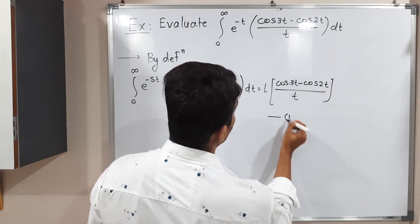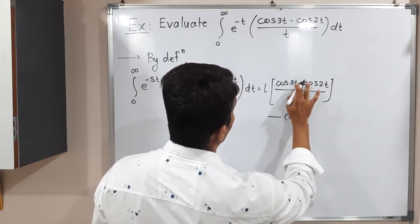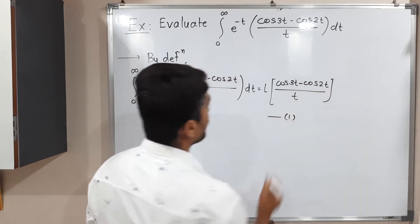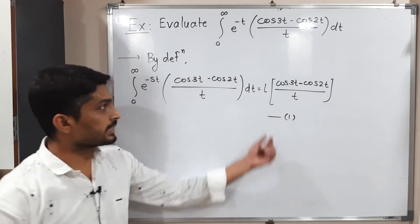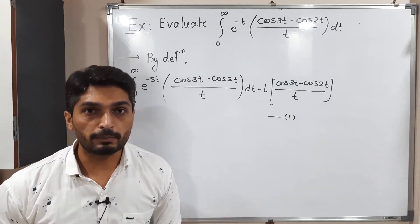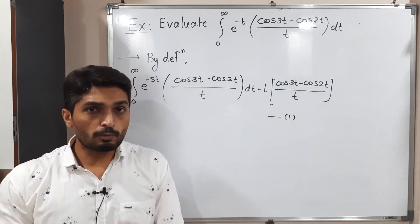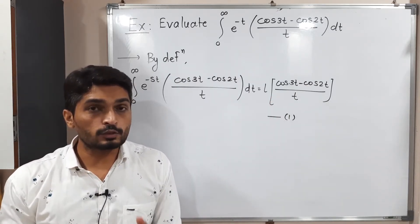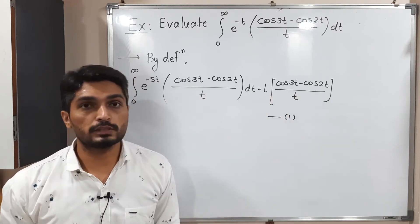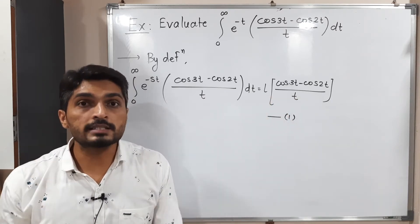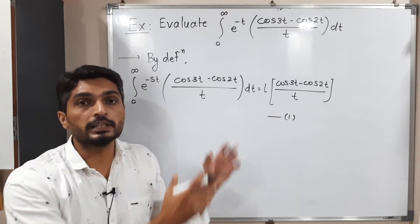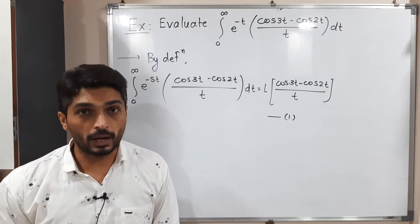I am calling this equation number 1. So this is the Laplace transform of (cos 3t minus cos 2t) divided by t. My target is to find the Laplace transform of this expression, and whatever answer we get, I will substitute it back into equation number 1.